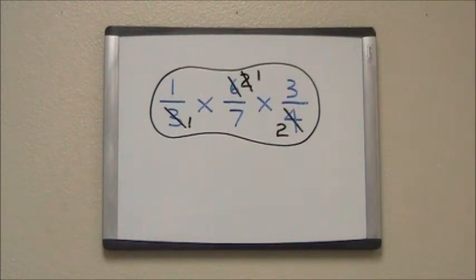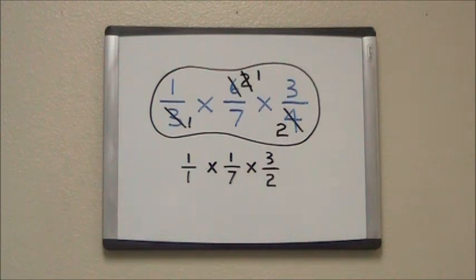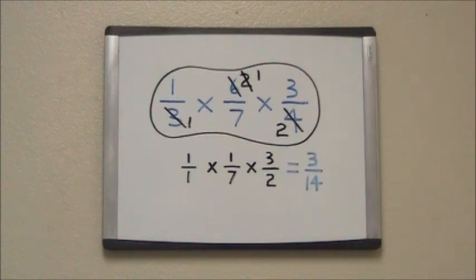This leaves us with a simplified equation that we can rewrite below. Now we just multiply across, starting with our numerators. One times one times three is three. One times seven is seven, times two is fourteen, which leaves us with a final answer of three-fourteenths.